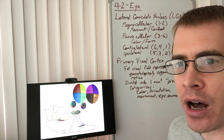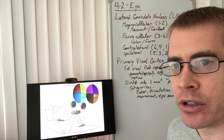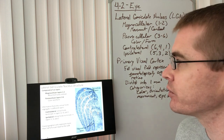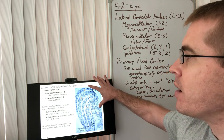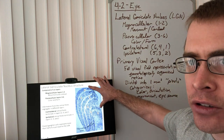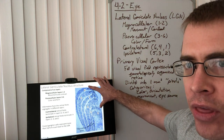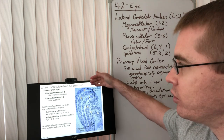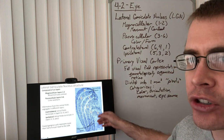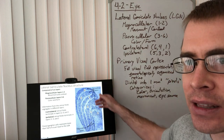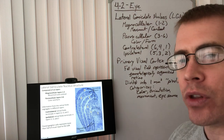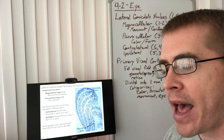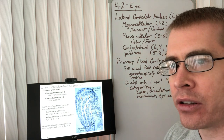The LGN is the target of the optic nerves. That's where that cranial nerve sends its information. The lateral geniculate nucleus, part of the thalamus, when looked at under the microscope, has multiple layers — six layers, in fact. Layers 1 through 2 are referred to as the magnocellular layer.